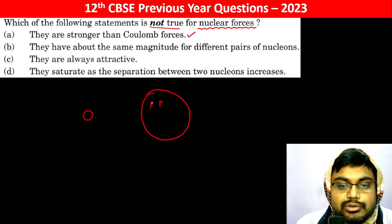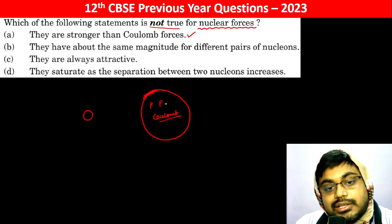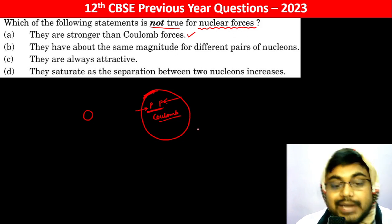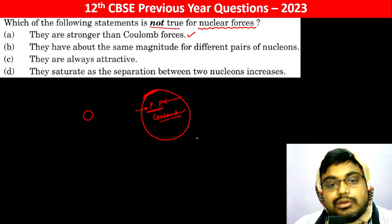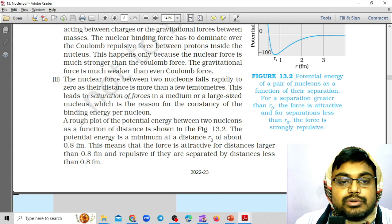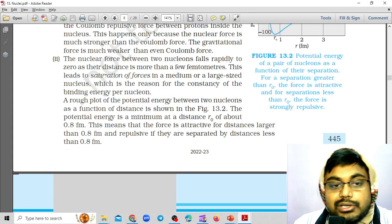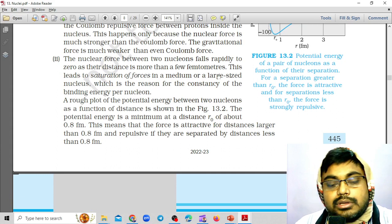The nuclear force is much greater than the Coulomb force. The nuclear force between two nucleons falls rapidly to zero as the distance is more than a few femtometers. Femtometer, it means 10 by minus 15.